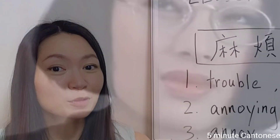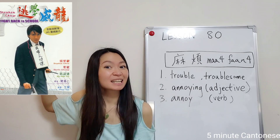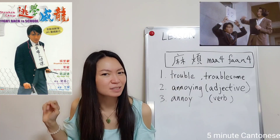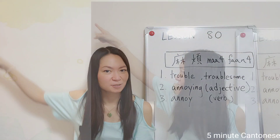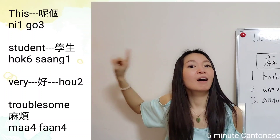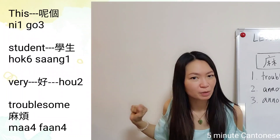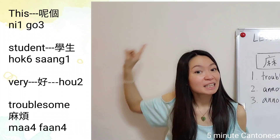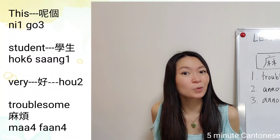For the adjective usage, for example in a movie, 周星馳 (Stephen Chow) is a very problematic student and no teachers like him. How to say it in Cantonese? 尼個學生好麻煩。 This student is very troublesome — 尼個學生好麻煩。